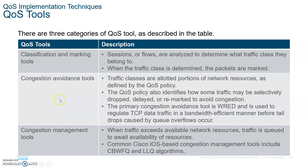QoS tools — there are three. When data comes in, it first meets the classification and marking tool. They check who you are, give you a mark indicating high priority or whatever is appropriate, write it on your ticket, and classify you. That's all they do — they just classify. There's a certain protocol that allows you to do just that.